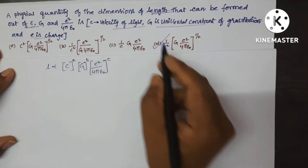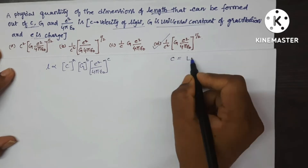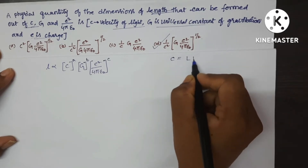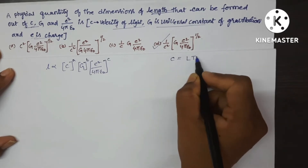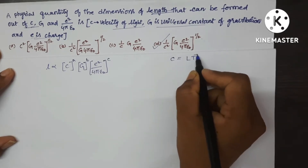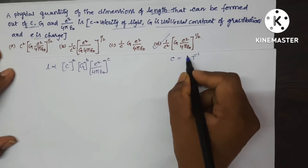Here, C is the velocity of light, so the dimensions of velocity are L T⁻¹.